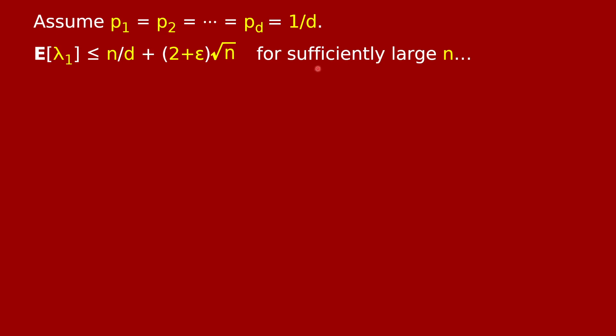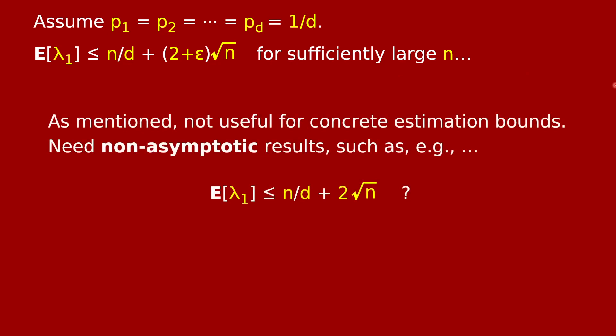Now this statement in the interesting case where all the p's are the same gives you an upper bound on the expected value of lambda 1, but it's only a limiting statement. Therefore, it's not useful for concrete estimation bounds because we don't know the rate at which this limit occurs. Perhaps it depends on how large n is compared to d. So for actual concrete estimation bounds for statistics problems, we need non-asymptotic results. For example, this would be a great result to have if this were just literally true, no asymptotics for every value of n and every value of d. In fact, this is true. That's a theorem I proved with John Wright in 2016.